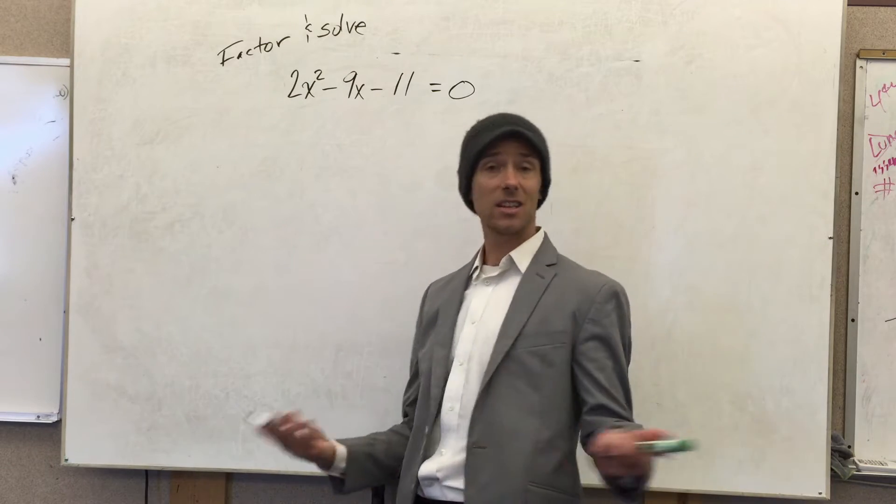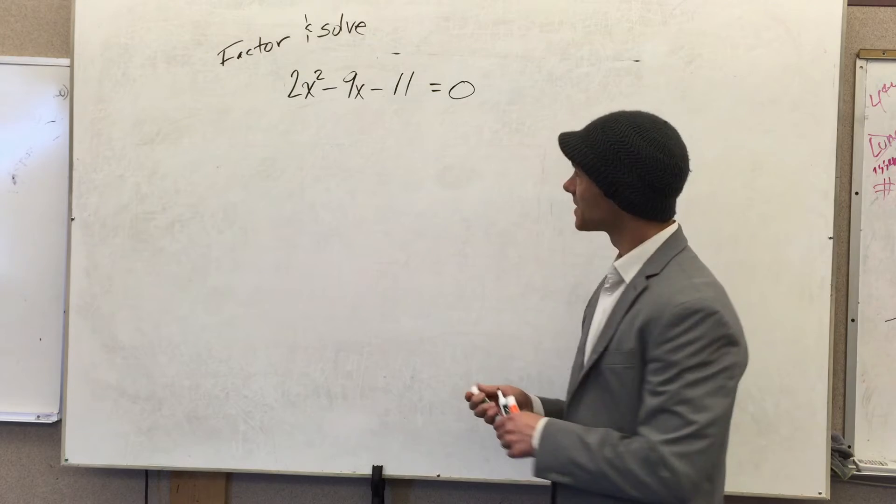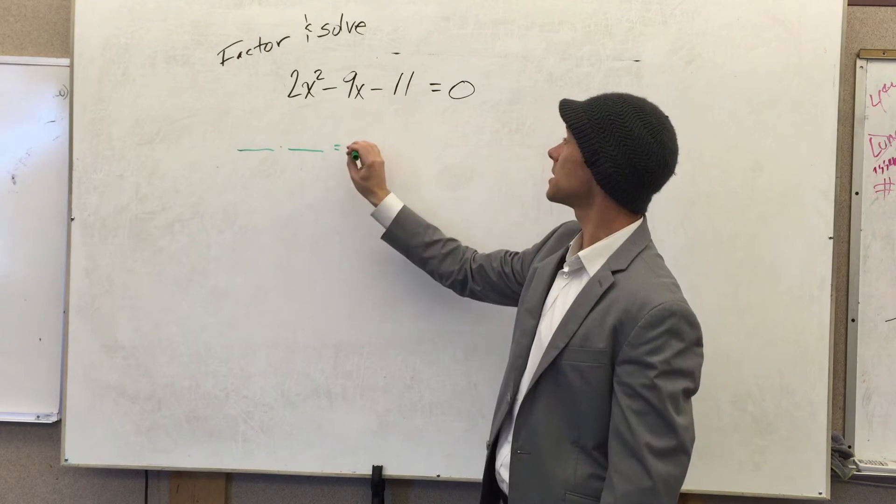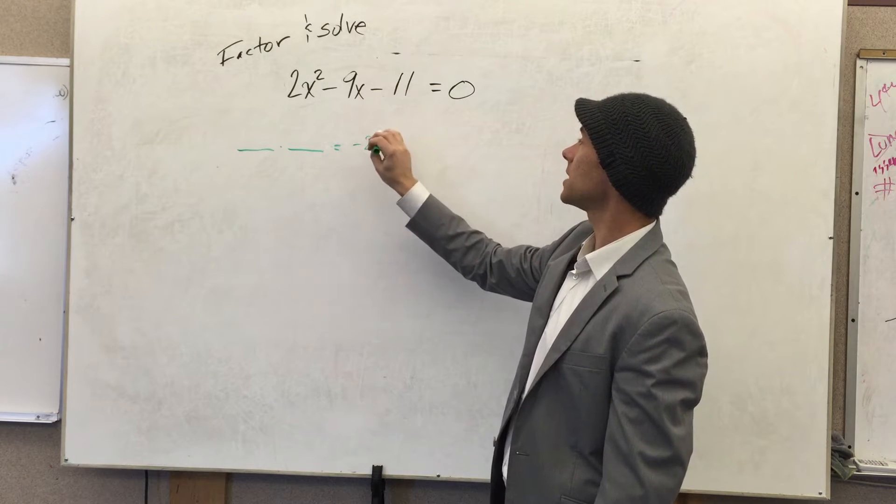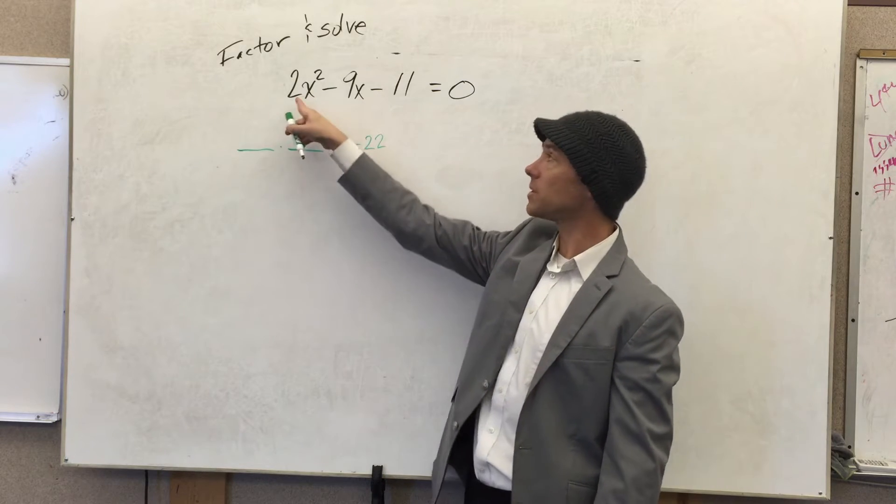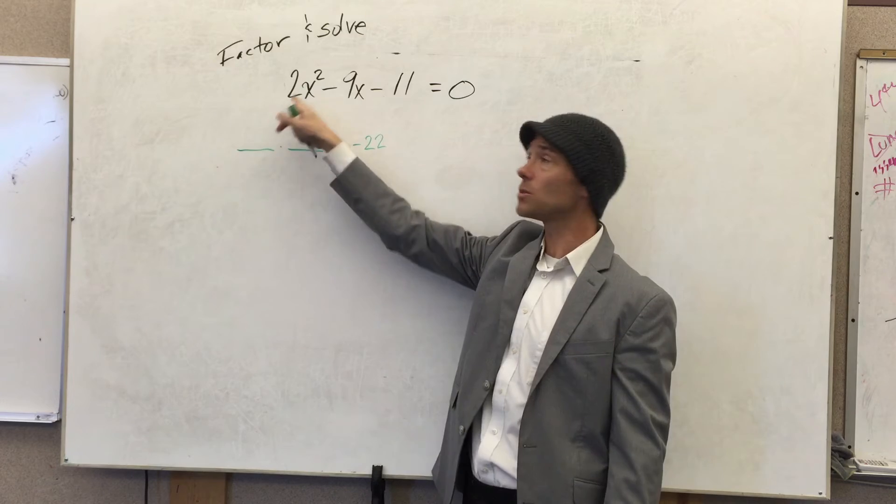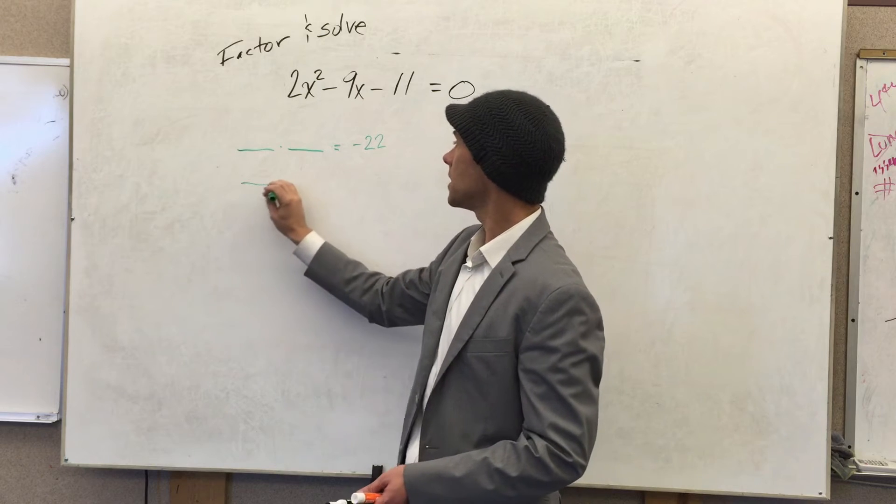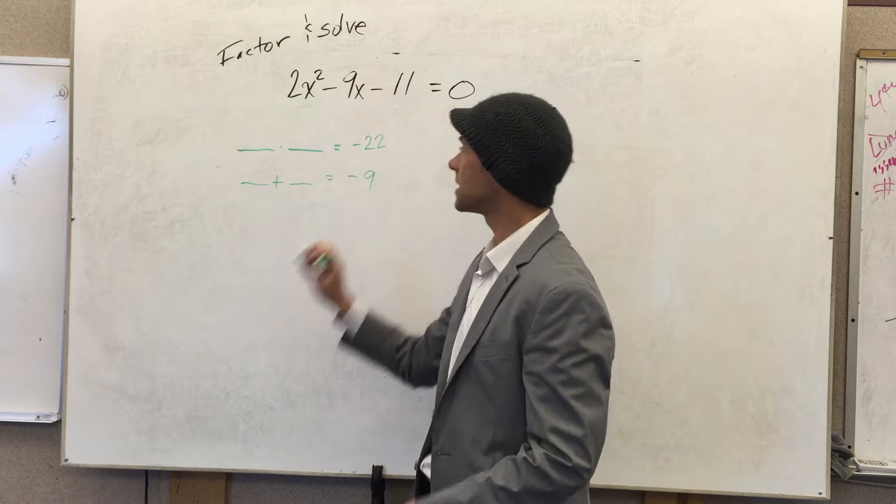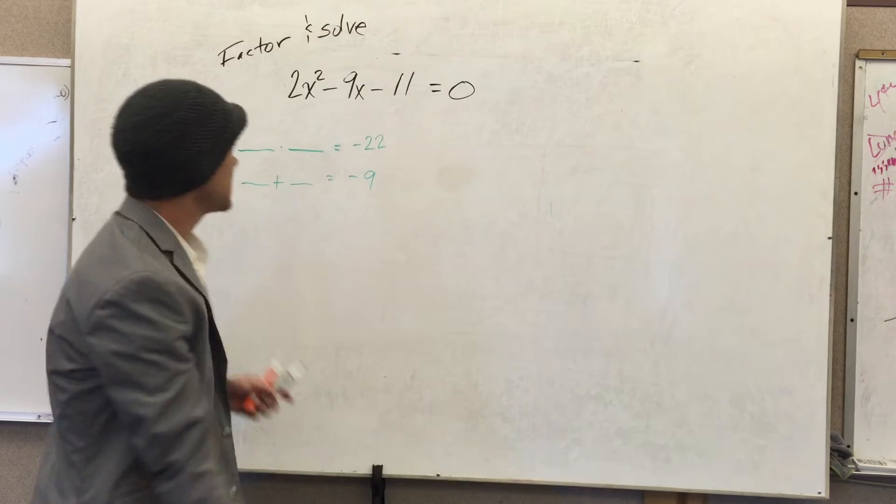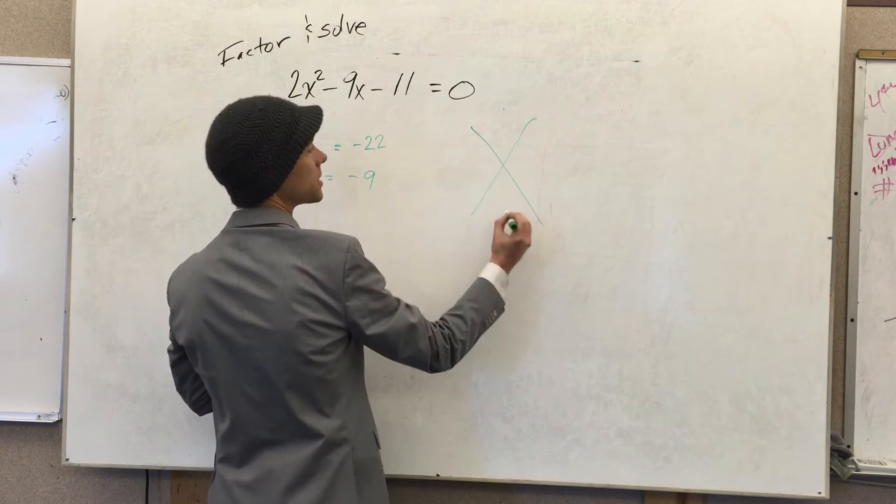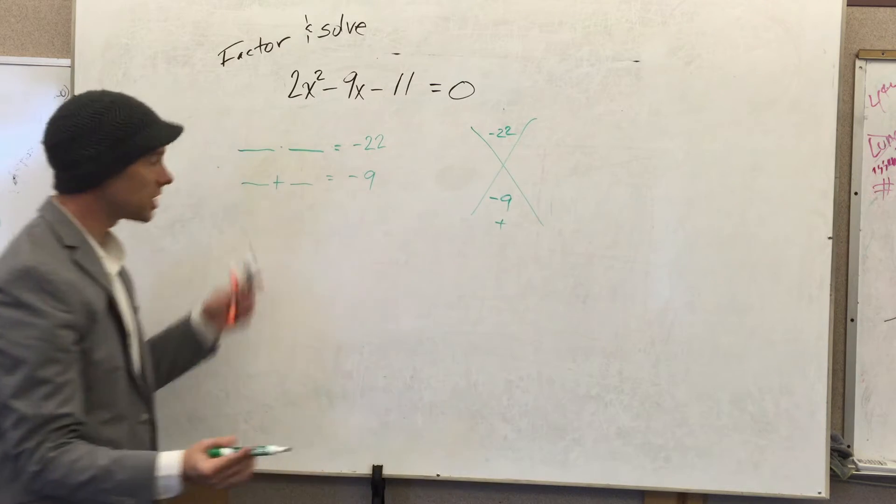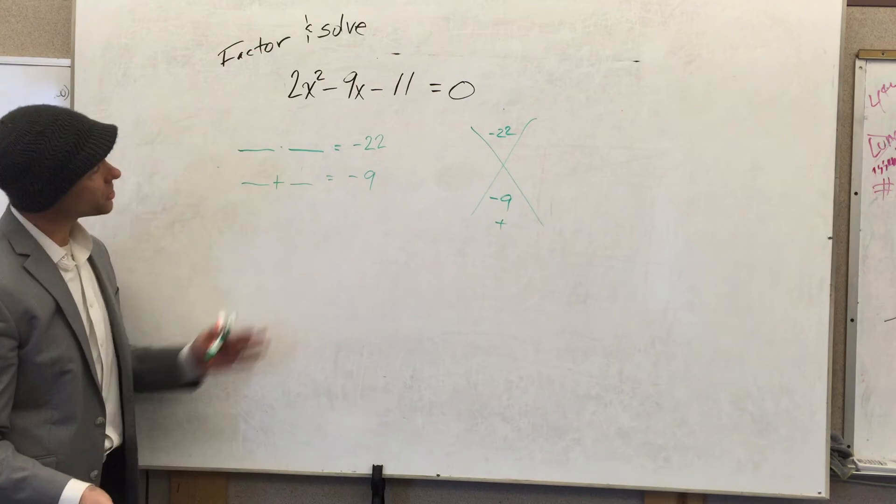Let's first factor and then solve. First move to factor is to solve this puzzle. You're trying to find two numbers that multiply into negative 22. This number is always a times c—the leading coefficient times the constant. So 2 times negative 11 is negative 22, and in the middle we want to add negative 9. Sometimes this is represented like this: we go multiply, we'll put the negative 22 here and the negative 9 there.